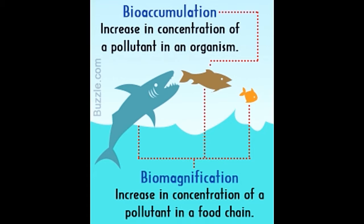Dichlorodiphenyl trichloroethane, or DDT, was widely used during World War II to control the mosquito population in areas where the U.S. Army was fighting. Its success during this period gave a boost to the idea of using it on crops for pest control. Over the course of time, its use increased manifold, and organisms that came in contact with it had to bear its brunt in the form of various health problems.